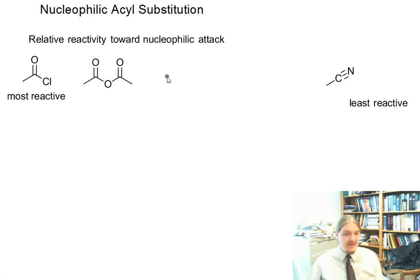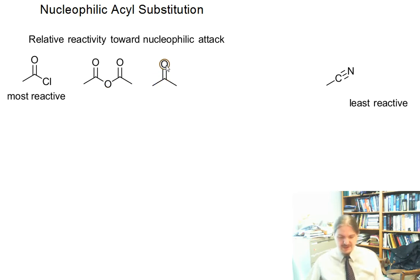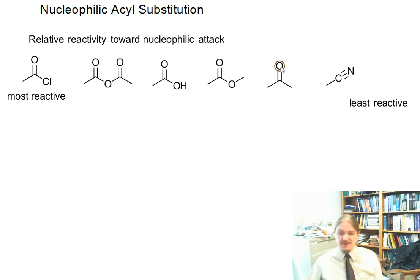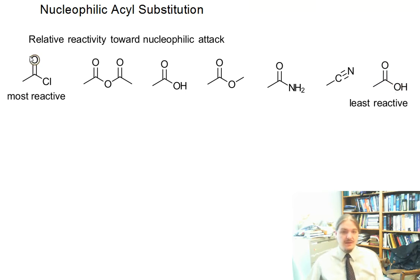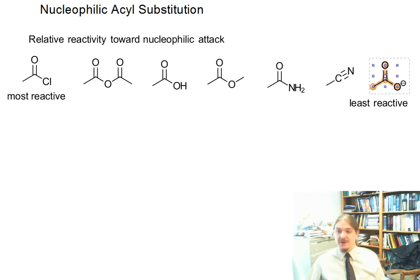Anhydrides are less reactive than acid chlorides towards nucleophiles. Carboxylic acids and esters come in next, then amides are the next functional group. And I'm actually going to draw over here on the far right the carboxylate anion, and that's important in a minute.